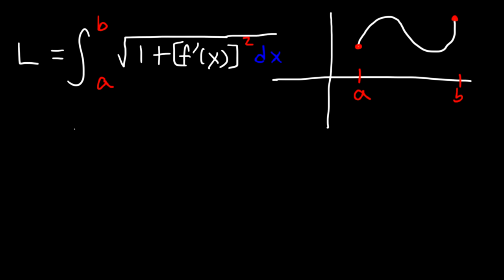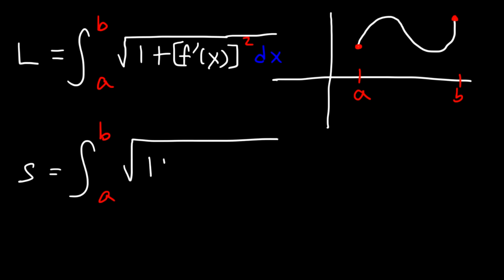In some textbooks you might see S instead of L. There's another variant of this equation which basically means the same thing. So instead of f prime of x, you might see it written as dy over dx, which means the same thing. Don't forget to square it. That's the formula we need to calculate the arc length — the length of this curve from A to B.